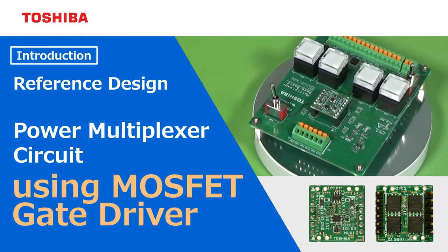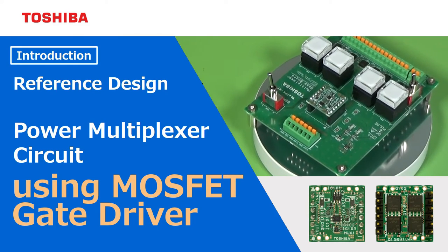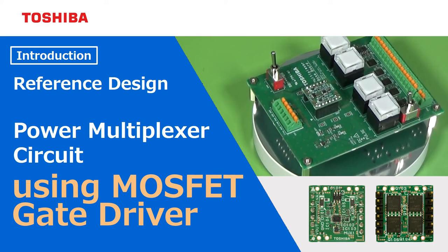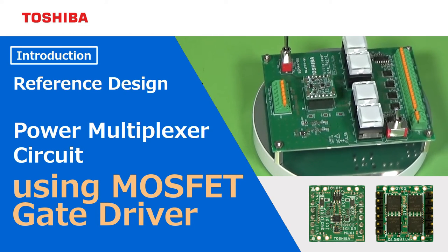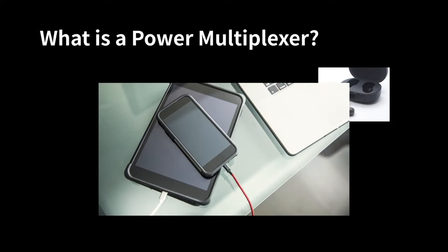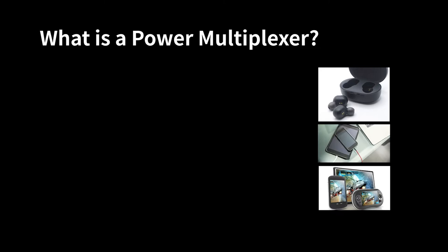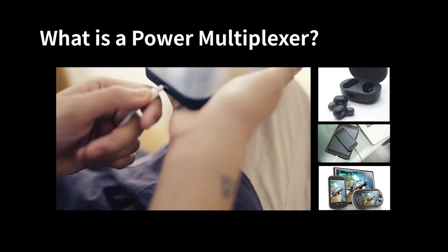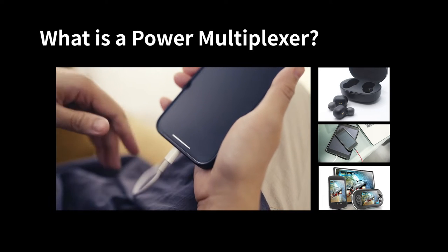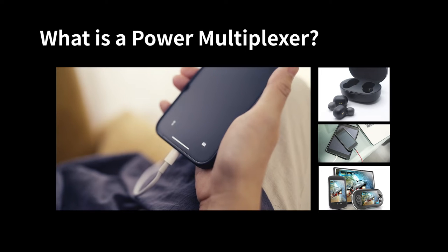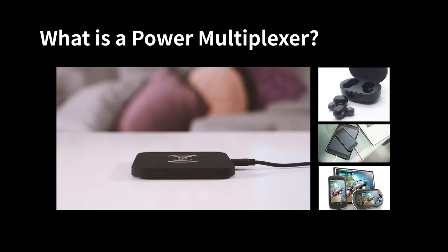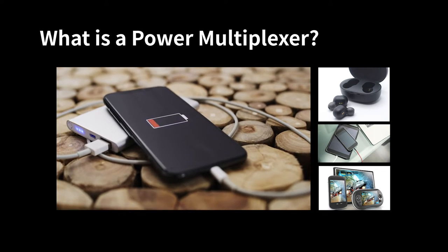This is the introduction to the reference design of a power multiplexer circuit using a MOSFET gate driver. The power multiplexer is a power switch for selecting one output from two input power supplies. It can be used for switching the input power used by USB power delivery, wireless charging, mobile battery, etc.